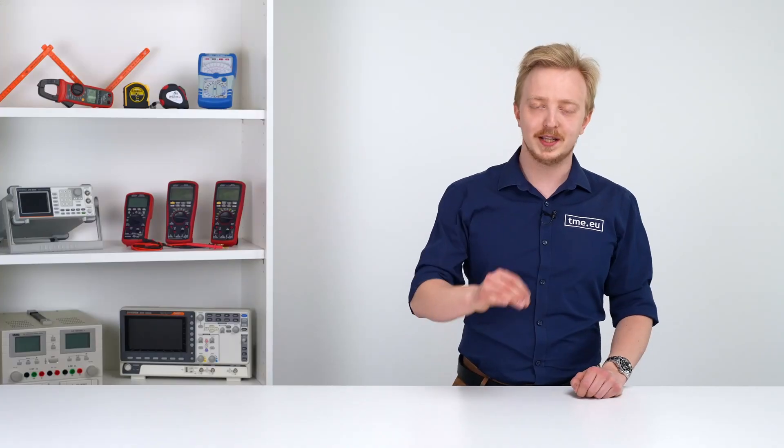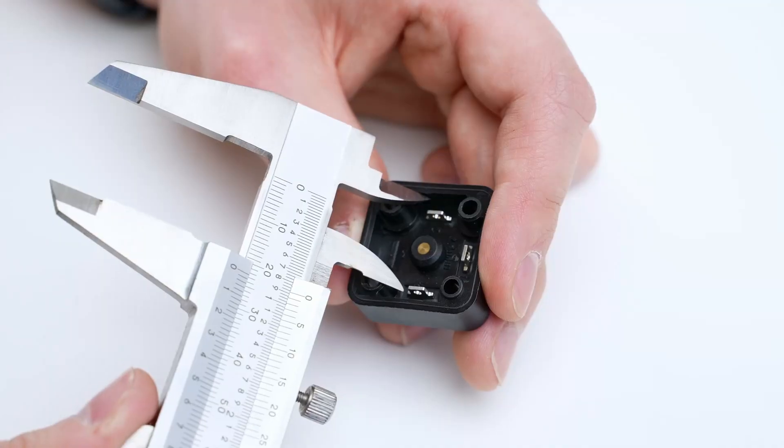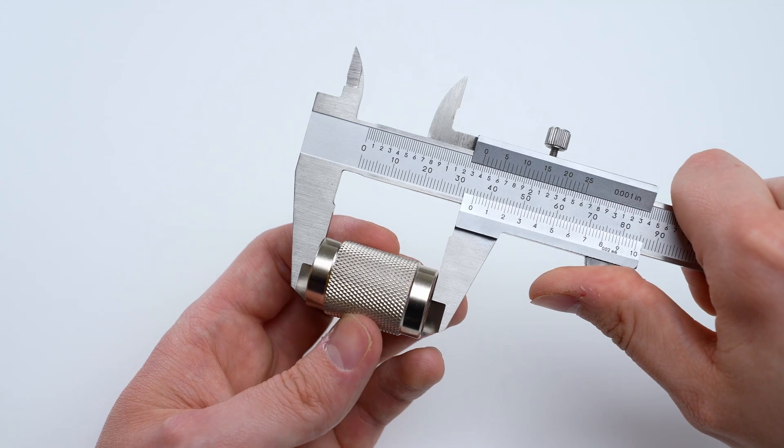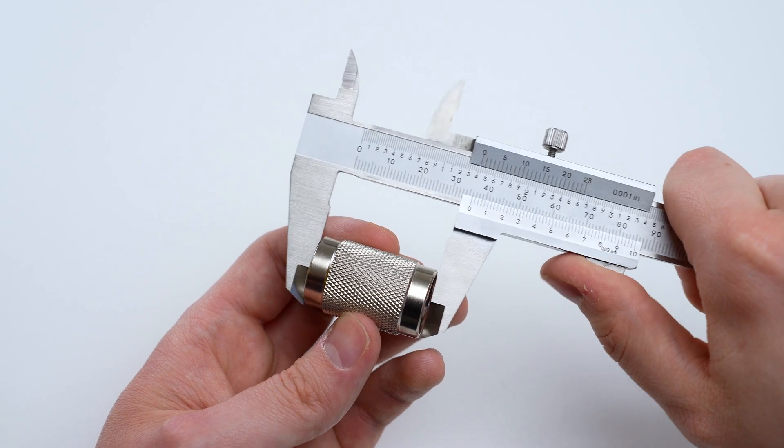For smaller and more precise measuring you should reach for calipers. This is great for measuring diameters both outside and inside. It offers accuracy up to fractions of a millimeter, available with analog and digital gauges.